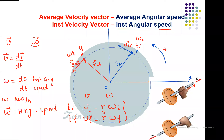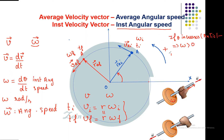In the case of anti-clockwise rotation, theta increases. We can say: if theta increases, omega must be positive — this happens in the anti-clockwise case. If theta decreases — in the case of clockwise rotation — then omega must be negative.